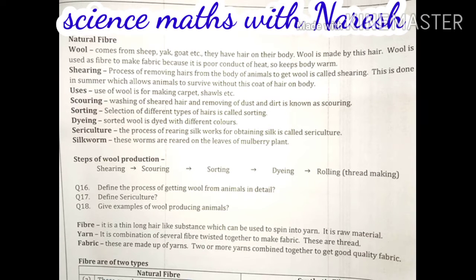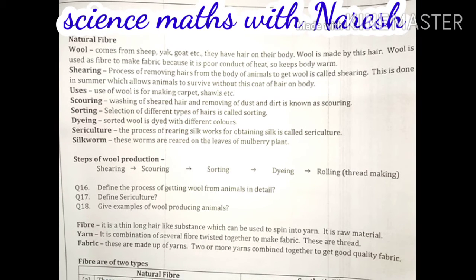We use wool from these animals because wool is a poor conductor of heat — it does not allow heat to pass through. When this type of fiber is used to make fabric, the clothes do not allow the transfer of heat from the body to the atmosphere, so it keeps the body warm.